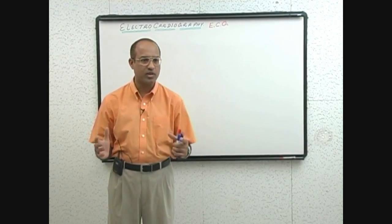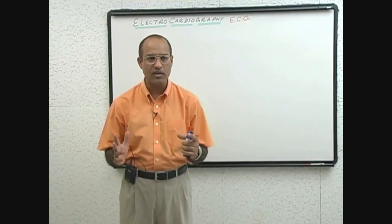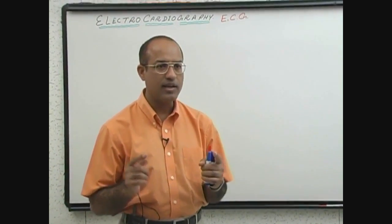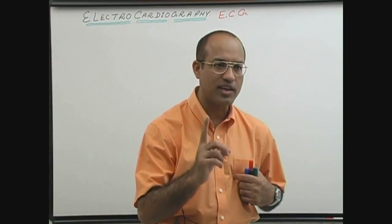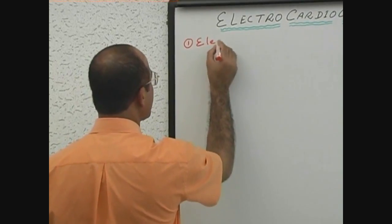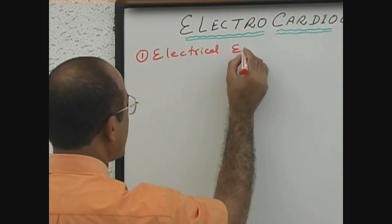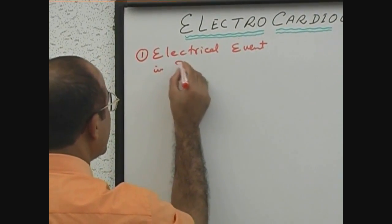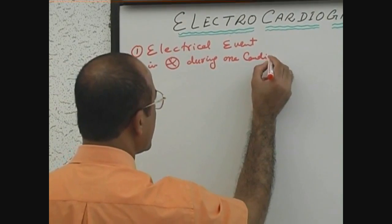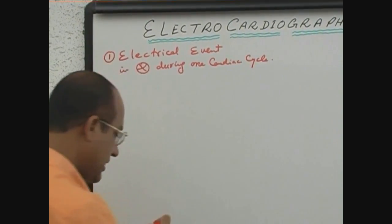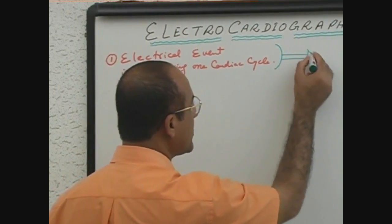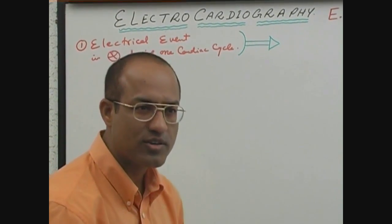What are the electrical events in the heart during one cardiac cycle? We have already covered some basic concepts about the electrical activity of the heart. Now we will discuss what are the electrical events in the heart during one cardiac cycle, and then we will see how these electrical events translate into vectors.